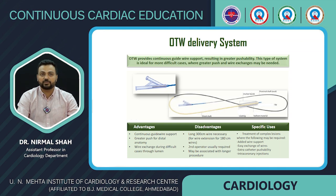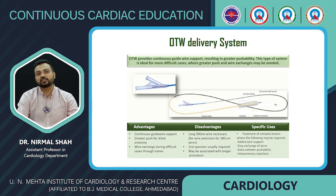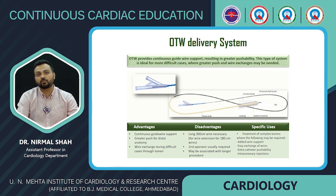Advantages of over-the-wire systems are continuous guide wire support, greater push for distal anatomy, and wire exchange during difficult cases through the lumen. Disadvantages include requiring a longer guide wire (300 cm), usually needing a second operator, and associated longer procedure time. Specific uses include complex lesions requiring added wire support, easy wire exchange, extra catheter support, or intracoronary injections.